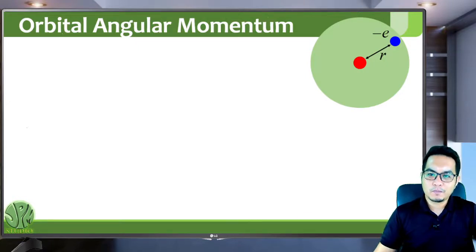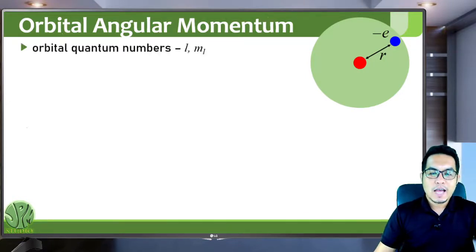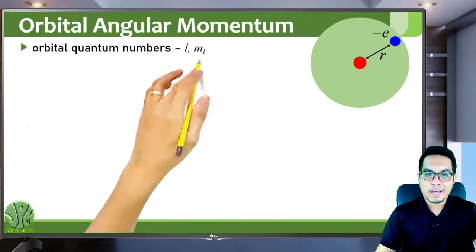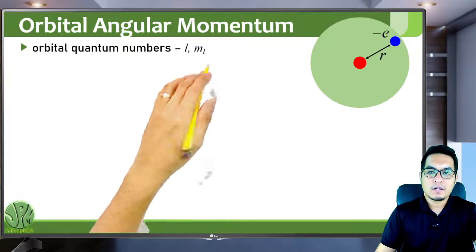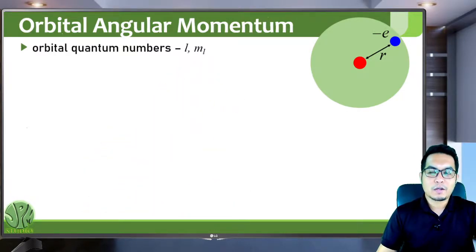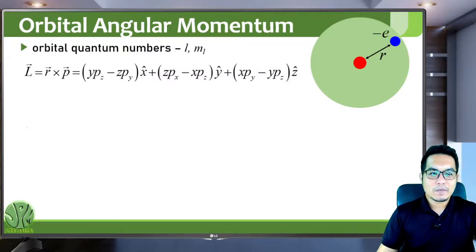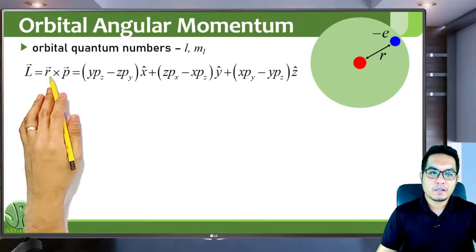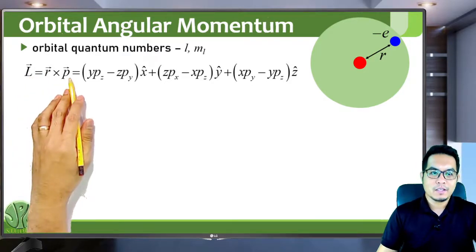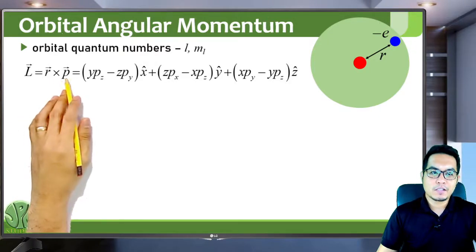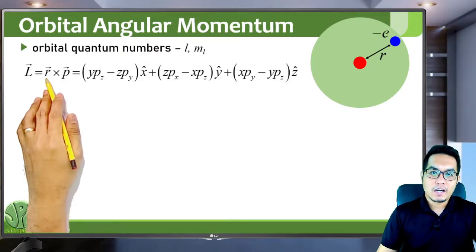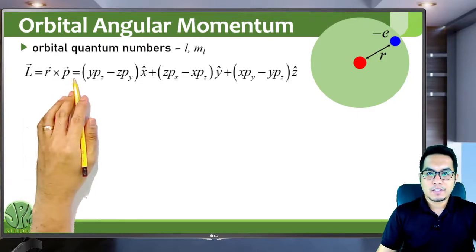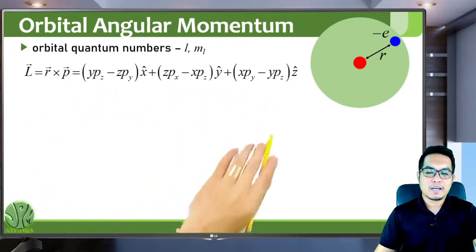Focusing only on the orbital angular momentum, the quantum numbers associated with this quantity are the quantum number l and the quantum number m sub l, where l corresponds to the orbital angular momentum. In classical mechanics, we define the angular momentum as the cross product of the position vector and the momentum vector. In Cartesian coordinates, taking the cross product where r has components x, y, z and p has components px, py, pz, you will get the following result.